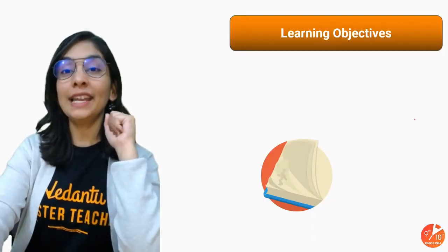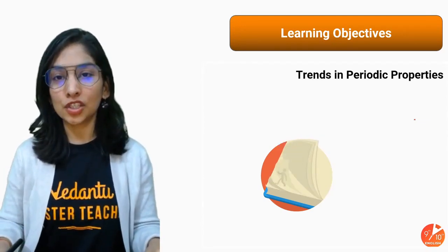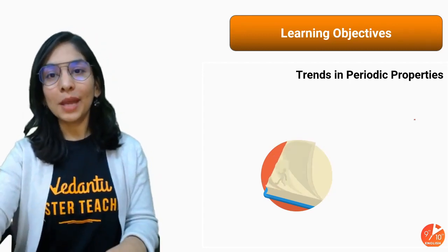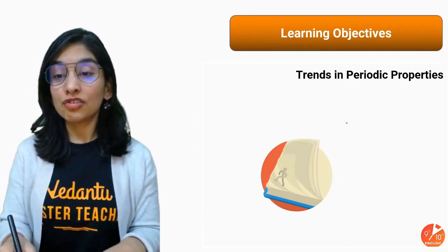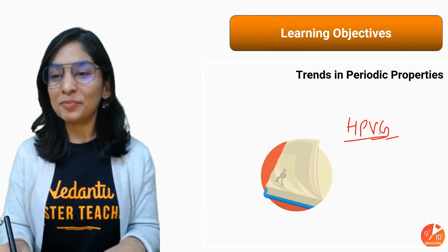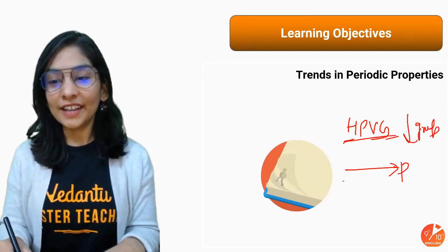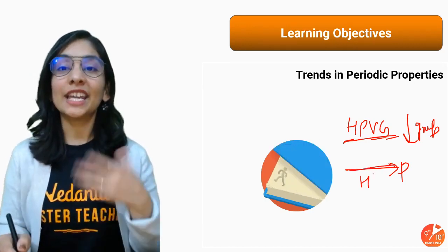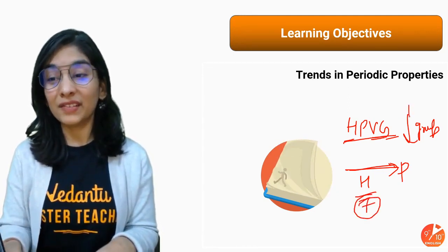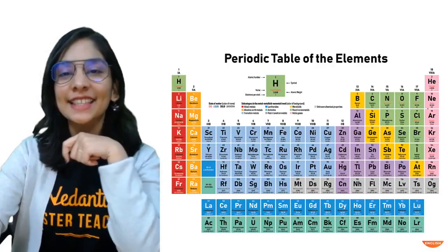What are we going to learn today? Trends in the periodic table — the most important video of this chapter — how different properties are going to change along a period and in a group. Period is horizontal; remember with HPVG: Harsh Priyam is Very Generous — horizontal is my period, vertical is my group. The modern periodic table has 7 horizontal periods and 18 groups.